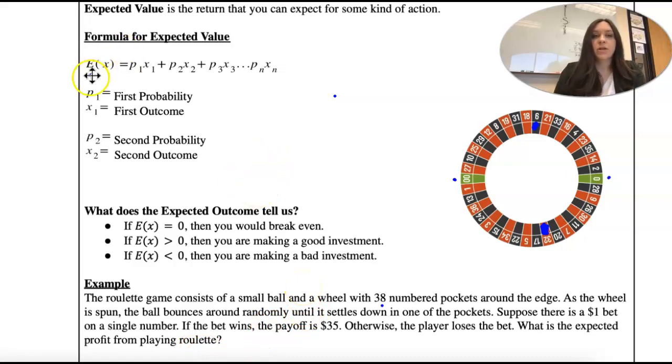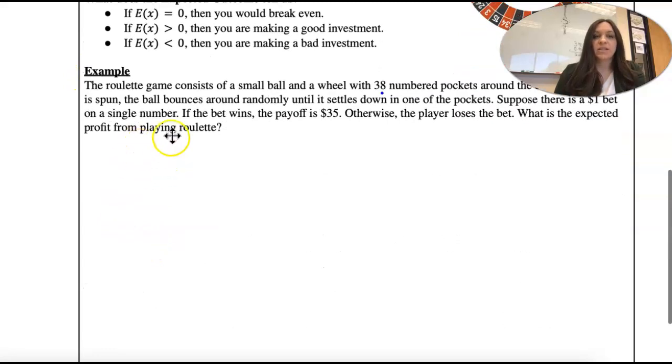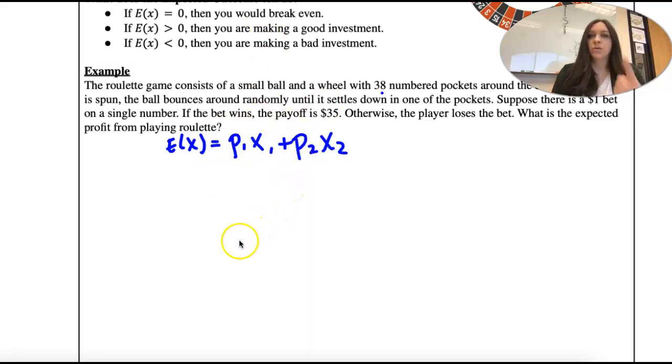So we're going to have our formula. We have E(x) equals x1. Oh, I wrote them backwards. P's first, I believe. Yep, roulette, P1, x1, plus P2, x2. Maybe you're like, I don't know how many outcomes there's going to be. Win, lose. Those are your outcomes.